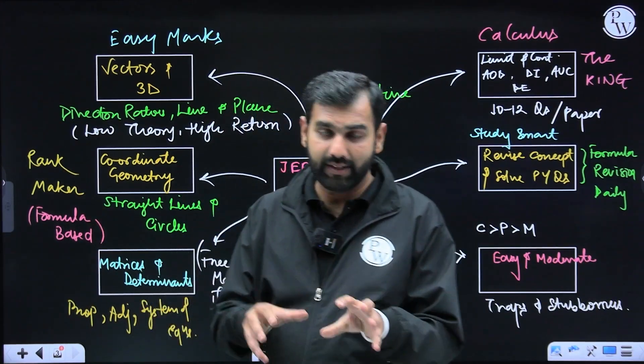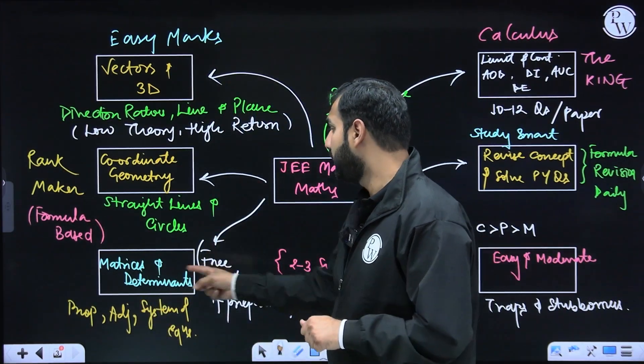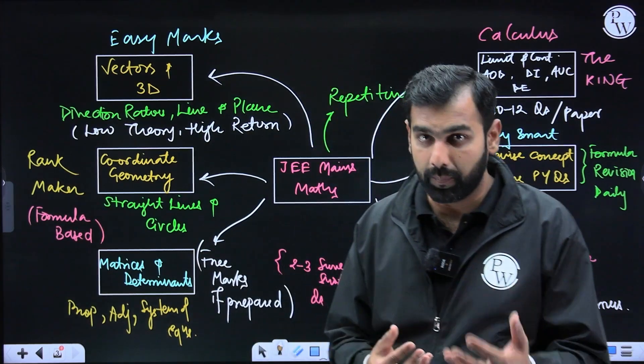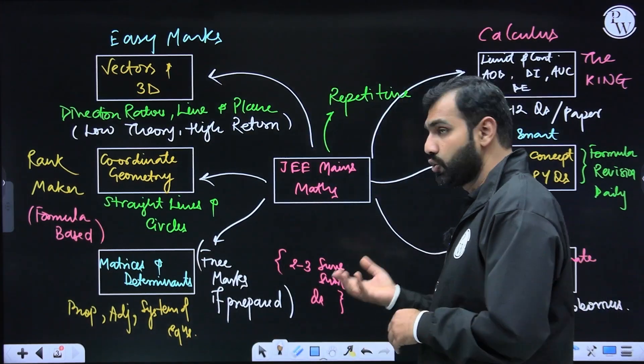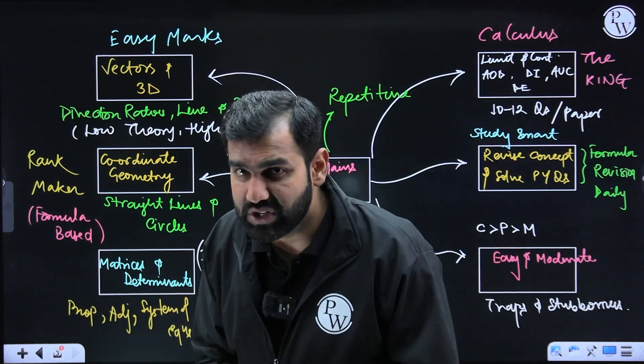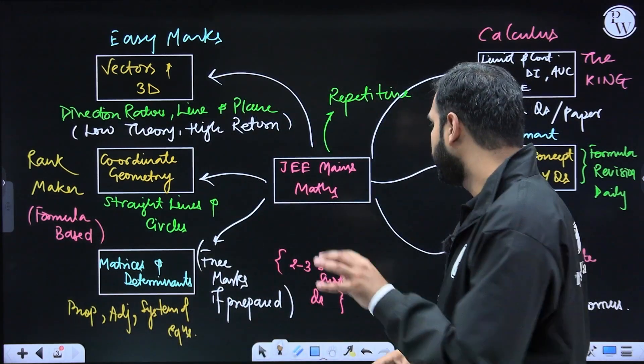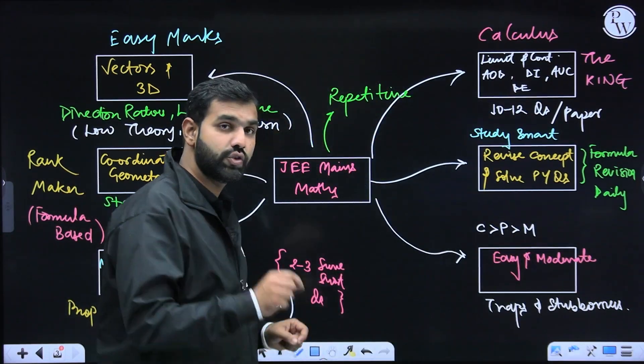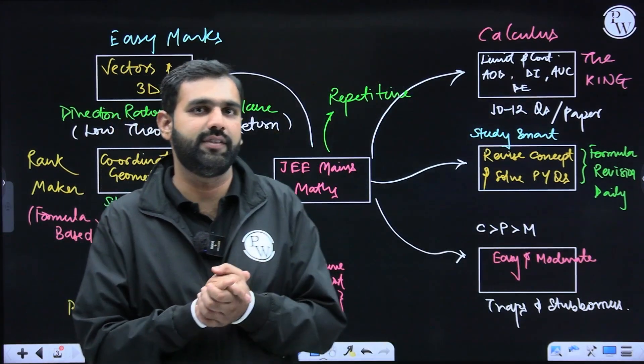Then the third section, which I'd like to highlight here, would be matrices and determinants. Learn operations on matrices and determinants. If you know properties, mixed properties, you know adjoint and inverse of a matrix. If you know how to deal with system of linear equations, then yes, you are done with this chapter. So free marks if you are prepared with this chapter. And two to three questions, short questions are asked from matrices and determinants.